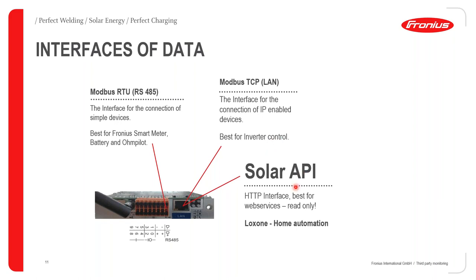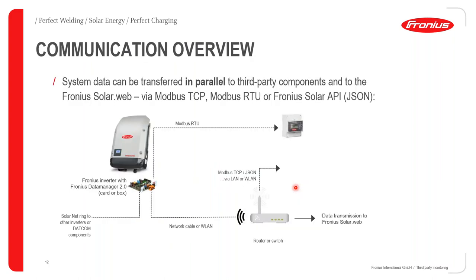As my colleague David Mwangi will cover, the API communication functions via HTTP and is best for web services only — it's a read-only service. System data can be transferred in parallel to third-party components and to Fronius SolarWeb via these communication ports: Modbus TCP, Modbus RTU, or API using the JSON protocol.